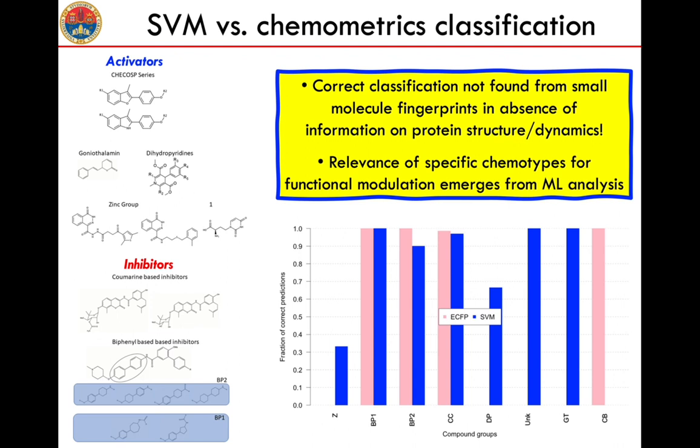This also tells us that the specific chemotypes come out from the analysis using the machine learning approach.